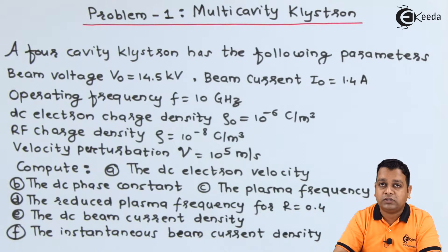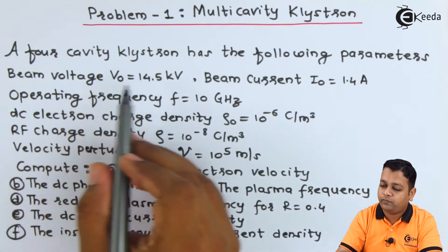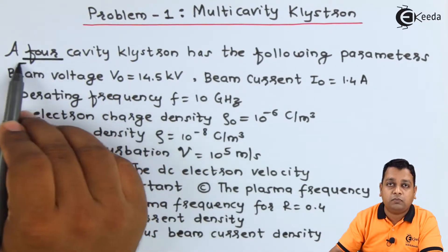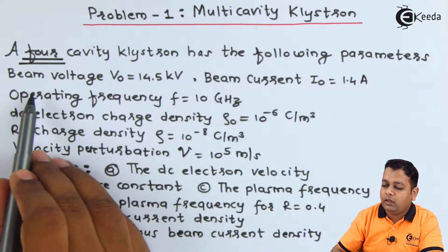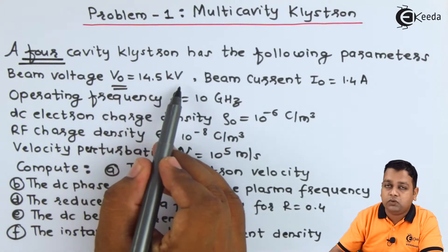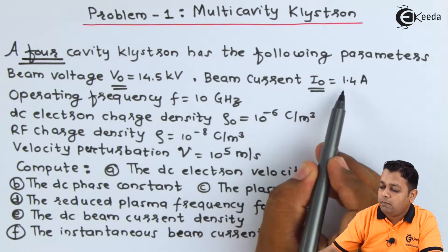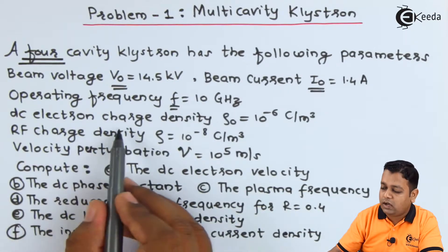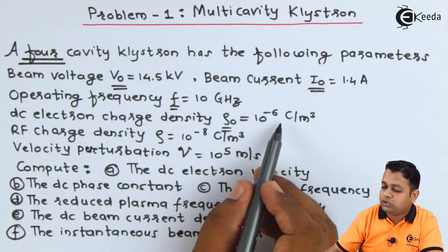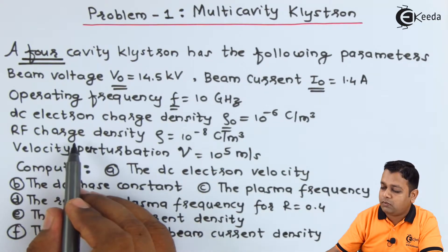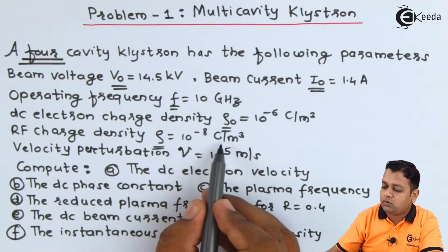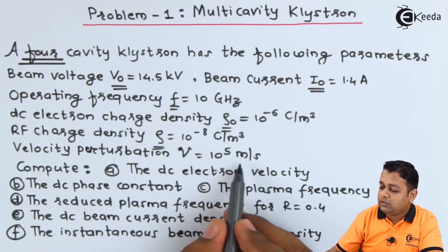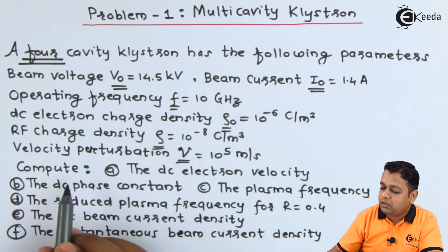The problem statement for multi-cavity klystron is: a 4-cavity klystron has the following parameters — beam voltage V0 = 14.5 kV, beam current I0 = 1.4 A, operating frequency F = 10 GHz, DC electron charge density ρ0 = 10^(−6) Coulomb per meter cube, RF charge density ρ = 10^(−8) Coulomb per meter cube, and velocity perturbation = 10^5 meter per second.